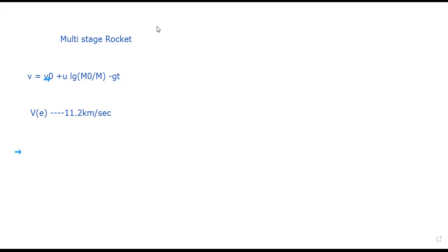When launched, the initial velocity given to the rocket system is approximately v-naught, which equals 4 km per second. This initial velocity is not sufficient to escape Earth's gravity. As the rocket moves up, it has to be accelerated — its velocity must increase from 4 km/s as time goes on. The question is: how do we produce this acceleration in the rocket?